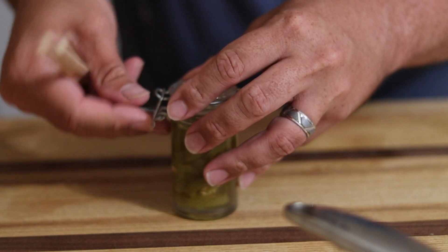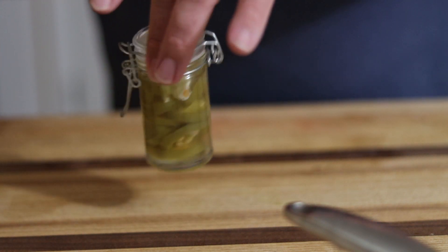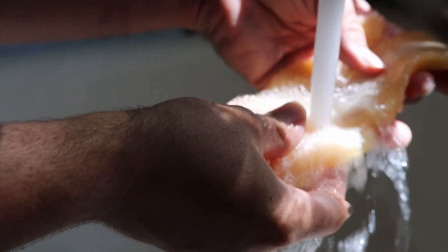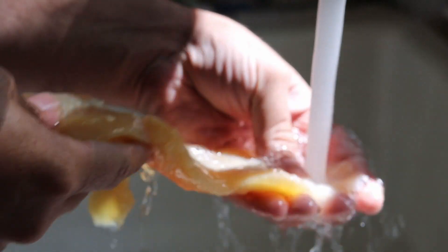Close her up and it's ready to join our trout in the fridge. The next day we're going to remove our trout from the brine, give it a quick rinse with fresh water and pat it dry.